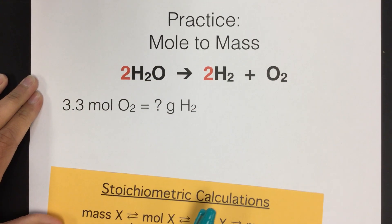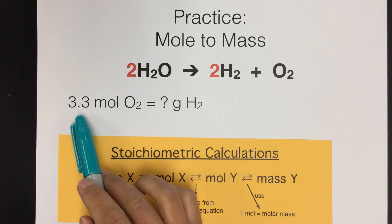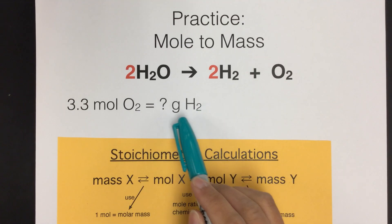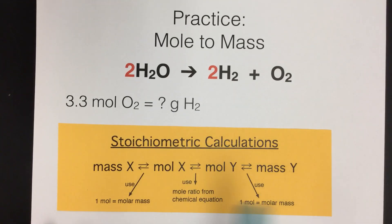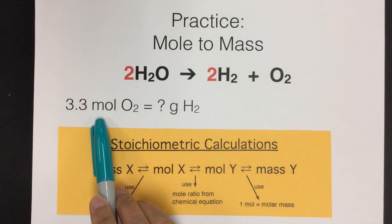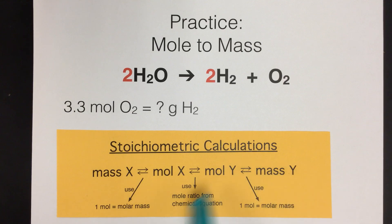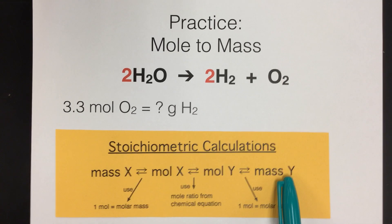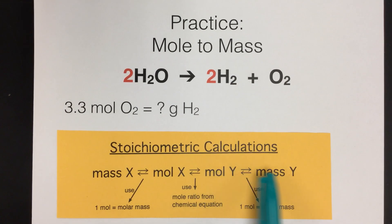In this question we are asked to convert from moles of O2 — if we have 3.3 moles of O2, how many grams of hydrogen could we produce? Looking at our cheat sheet, in order to go from moles of one substance to mass of another substance, we have to first convert to moles of the substance we want the mass of. So we need to do a mole-to-mole conversion and then a mole-to-mass conversion.